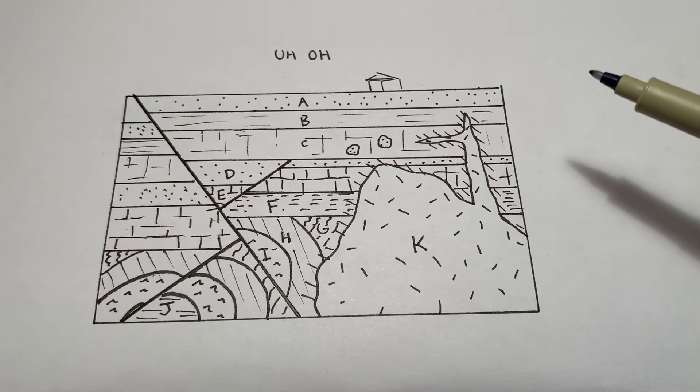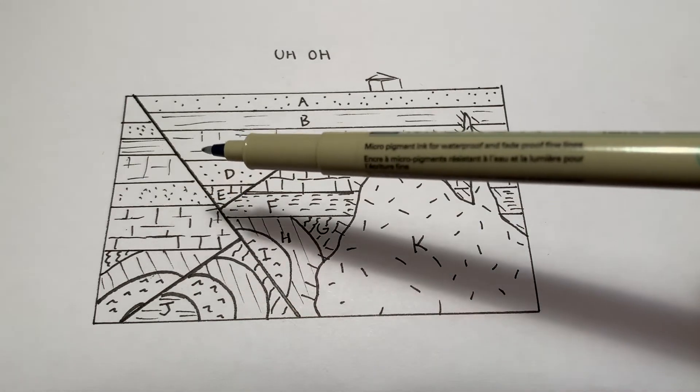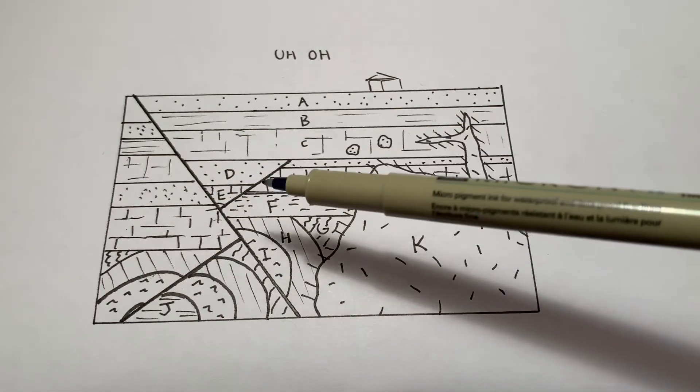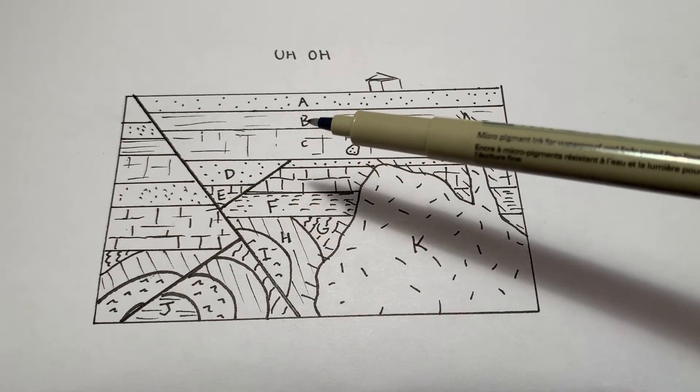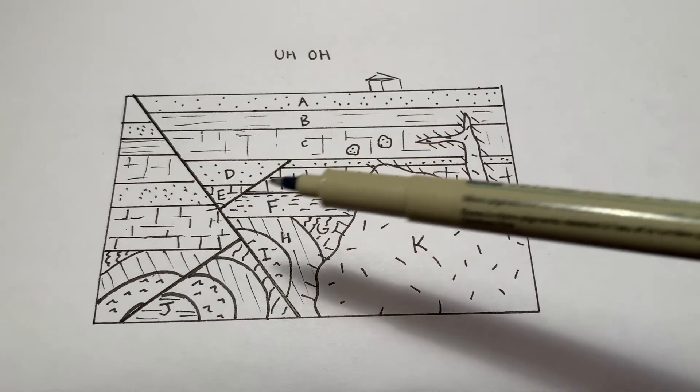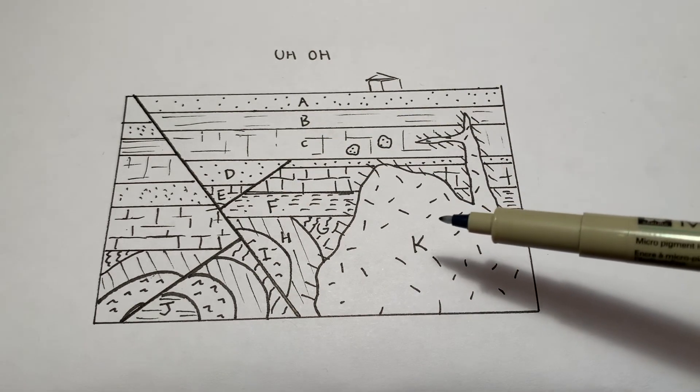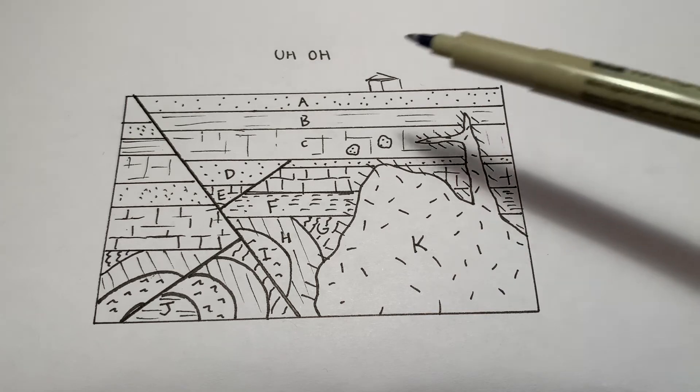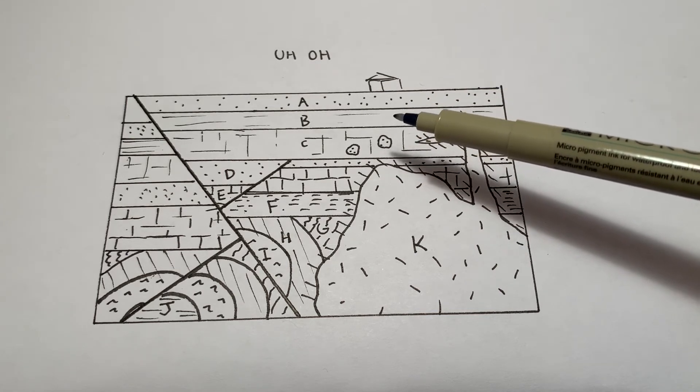You're going to have things all over the place. You're going to have faulting going on, multiple faults, probably cross-cutting each other, creating different upthrown and downthrown planes. You're going to have igneous intrusions messing things up. You're going to have inclusions of rocks within each other.